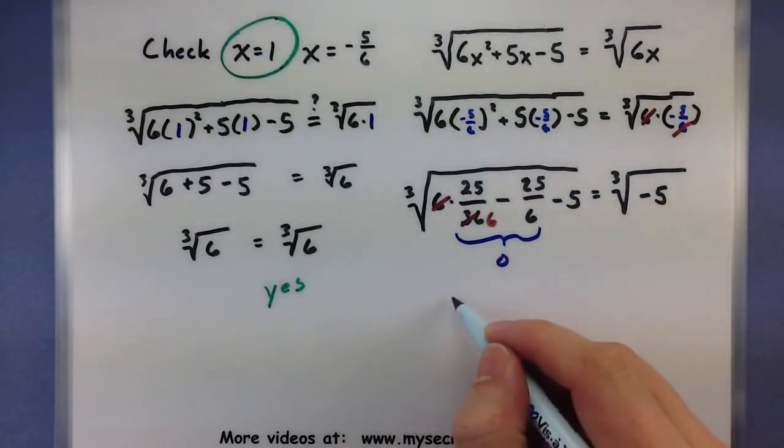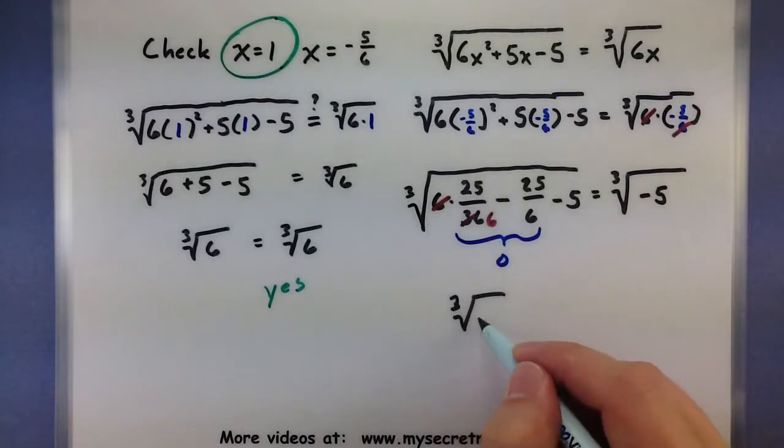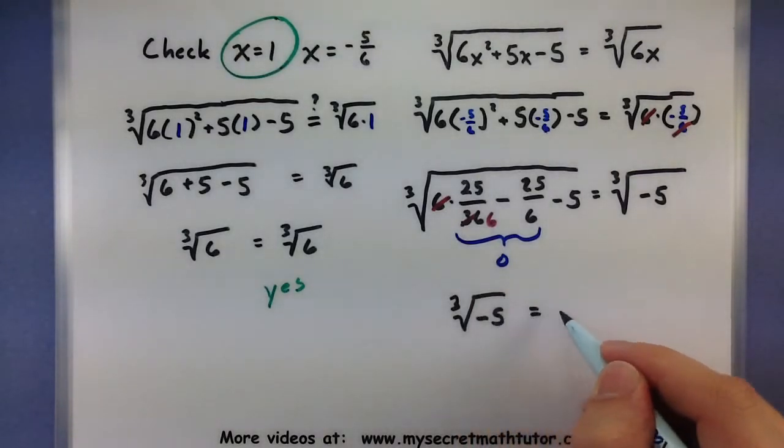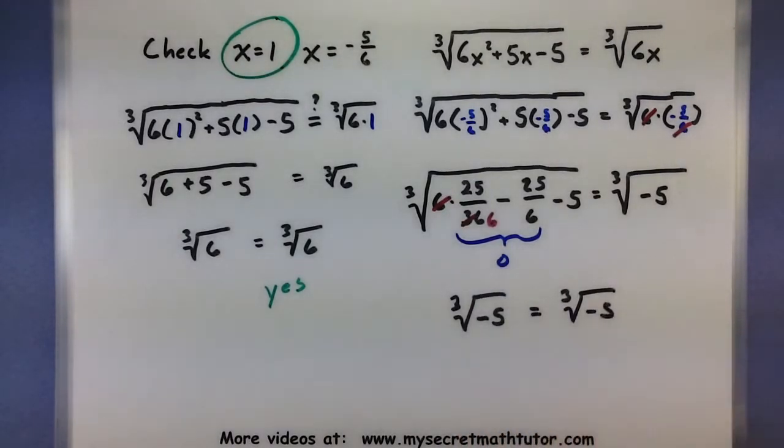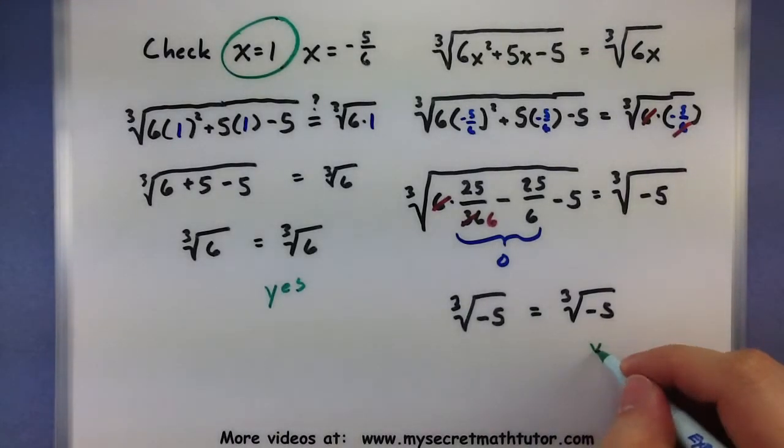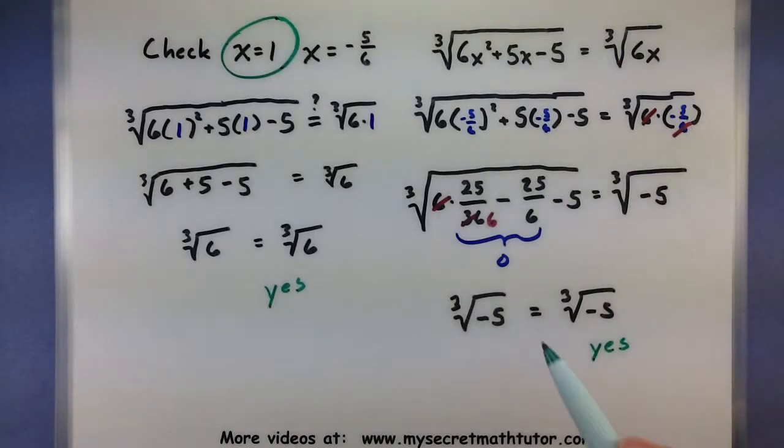All right, so let's write everything that's left over. So I have the cubed root of negative 5 equals the cubed root of negative 5. And look at that, both of these things match just fine. So we can say yes, this one also checks out.